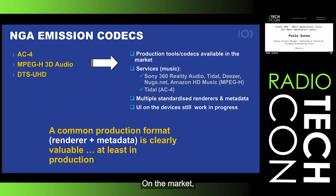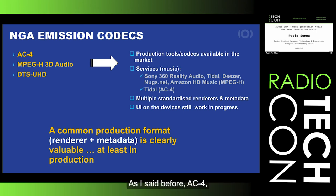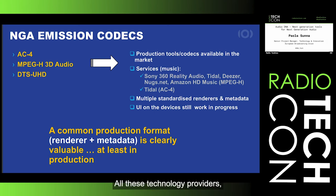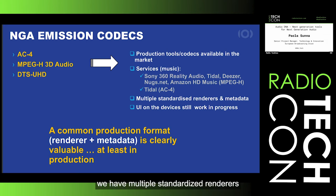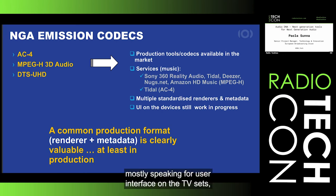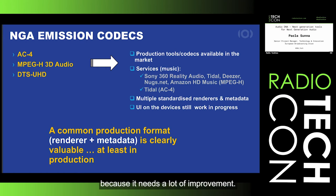So what's the current situation? On the market we have different next generation codecs — as I said before: AC4, MPEG-H, and DTS Ultra Definition. All these technology providers have released production tools and codecs, and are also providing some services. At the same time, we have multiple standardized renderers and metadata. In terms of user interface, mostly for TV sets, I would say it's still a work in progress and needs a lot of improvement.